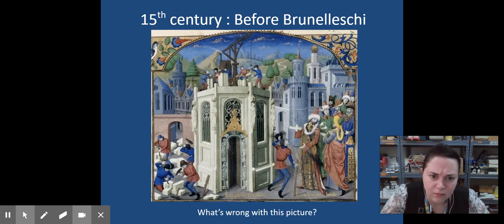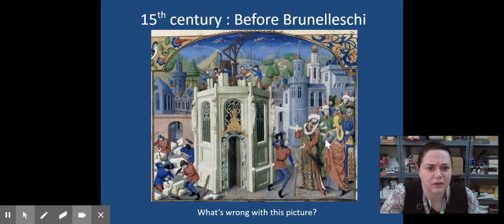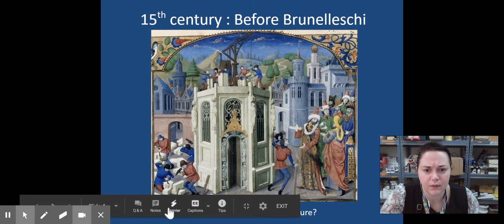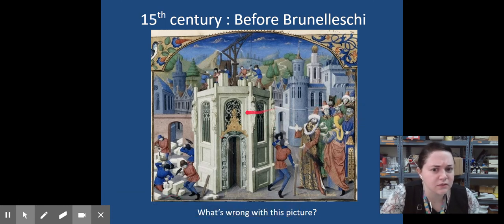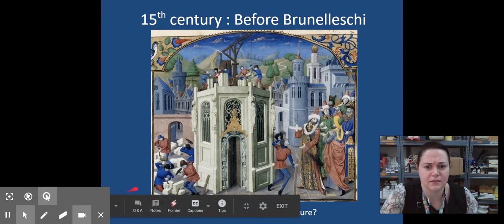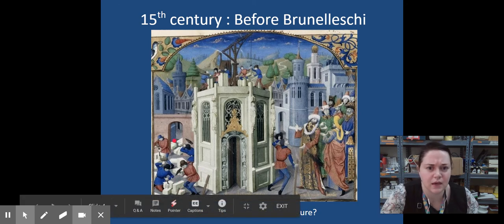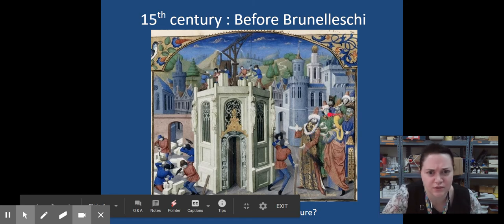Well, number one, there are examples of overlapping, but diminishing size is definitely skewed. If you look at the gentleman over here, he's just about as tall as the building. Well, that doesn't make sense. When we think about the spatial planes, notice how these people are stacked up on top of each other.